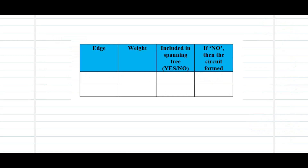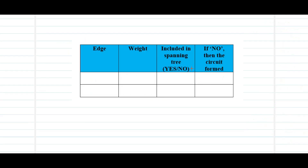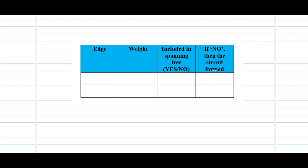Next, we apply the algorithm using a tabular format. The table contains: the edge column (arranged in increasing weight order), the weight column, and a column for 'included in spanning tree — yes or no.' Since we add edges one after the other making sure we don't form a circuit with existing ones, we record whether each edge gets into the spanning tree. If an edge is not added, it's because it would form a circuit, and we note what circuit it forms.